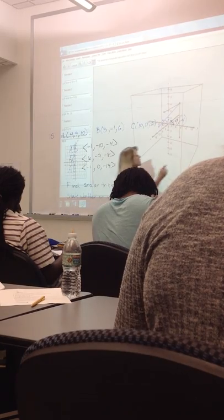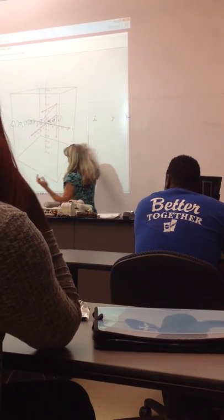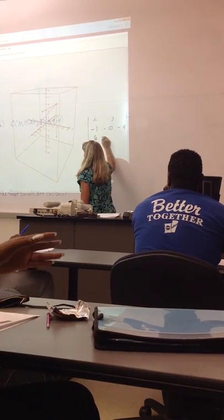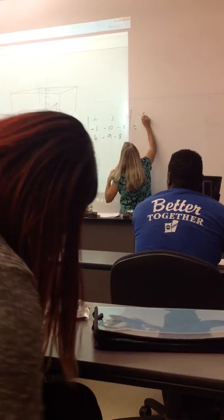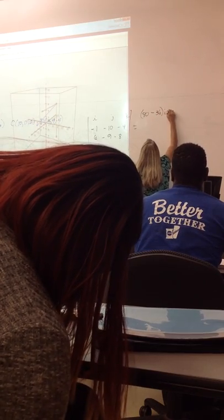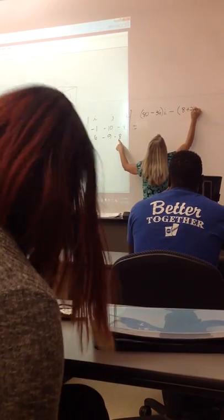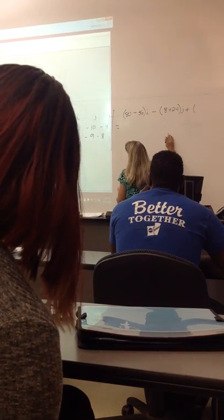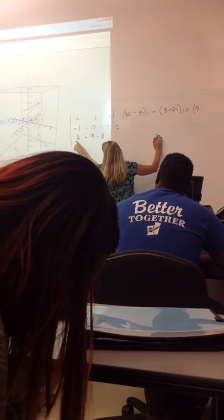So if you cross AB with AC, again, you could have picked any two to cross. We will get 80 minus 36, and then remember minus 8 plus 24 plus 9 and plus 69.